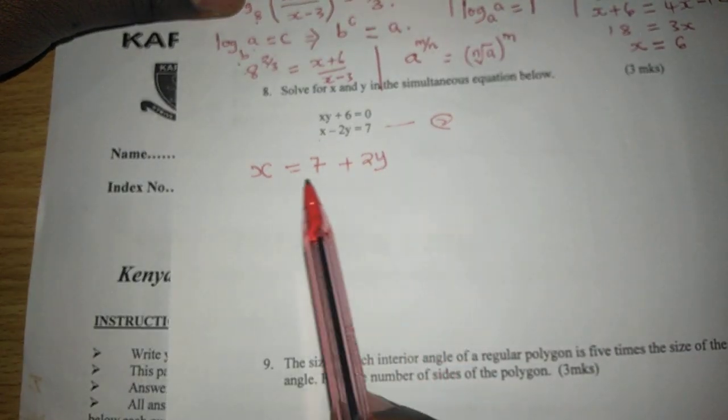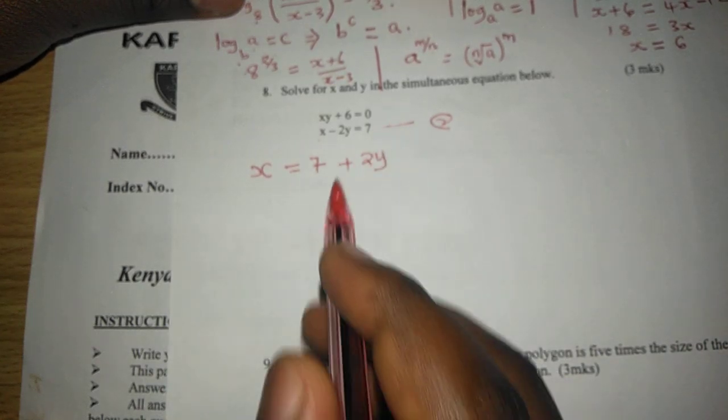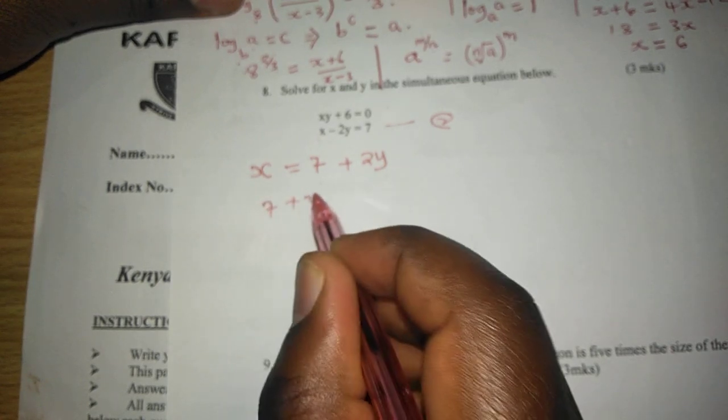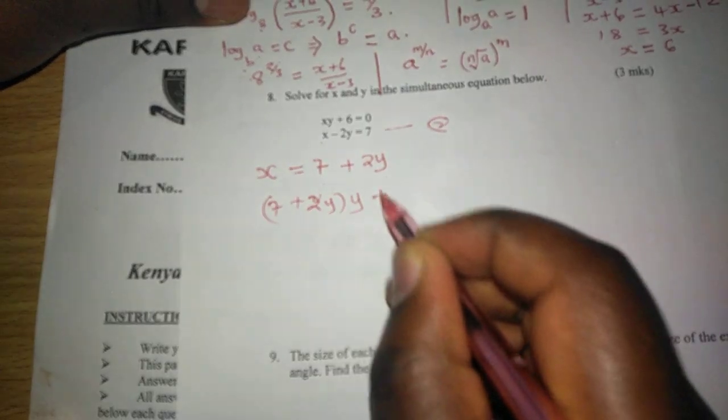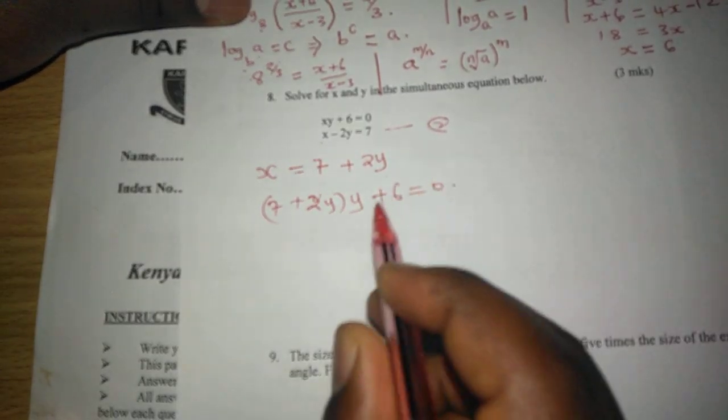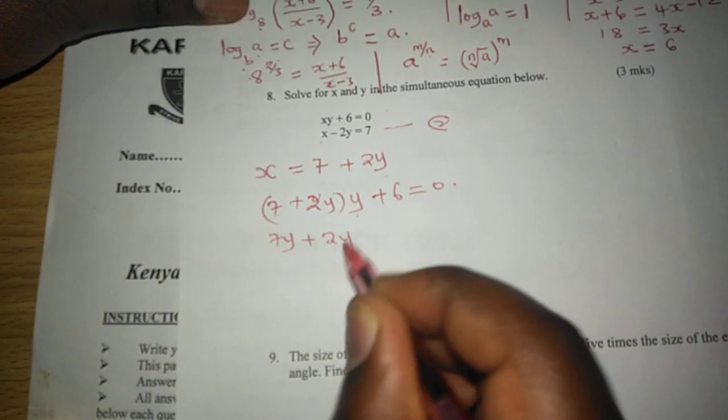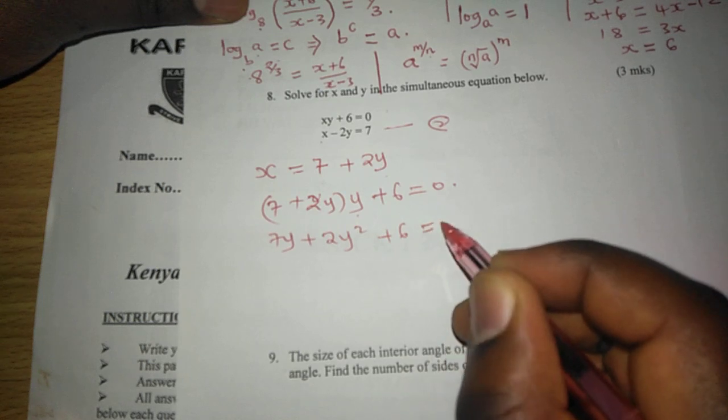Whatever we've expressed as x, now we substitute it in equation 1. Such that in equation 1, instead of x, we have 7 plus 2y, then multiplied by y, plus 6 equals to 0. Such that this is 7y plus 2y squared plus 6 equals to 0.